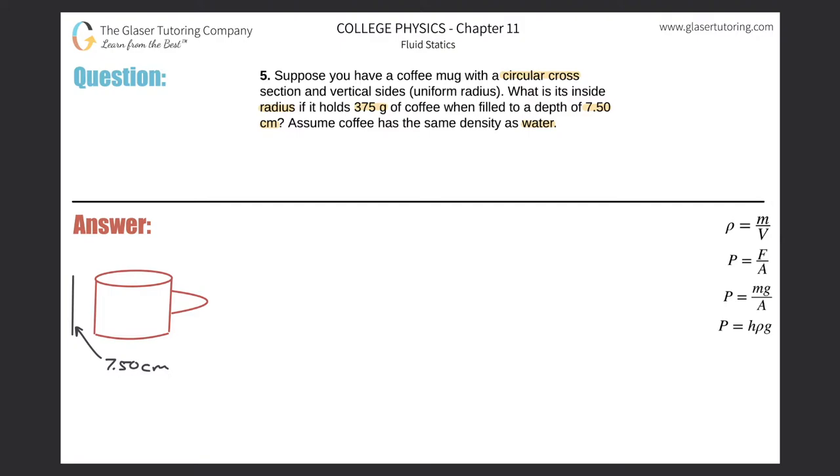They're basically telling us that we need to know the density of water. So why don't we write that down? The density of water is about one gram per cubic centimeter.